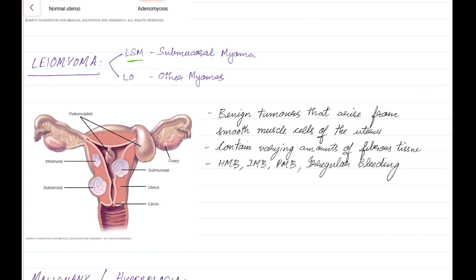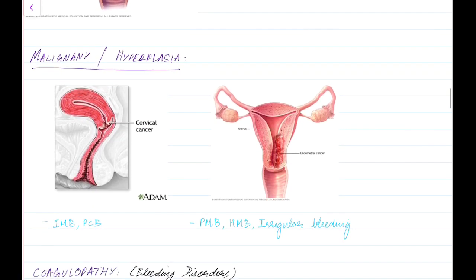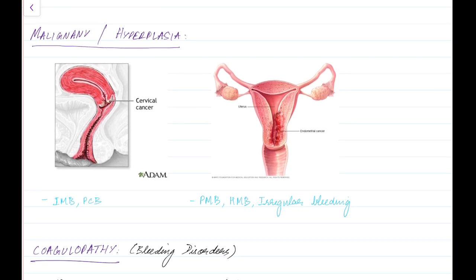Coming to the next cause — leiomyoma. Leiomyoma can be divided into LSM (submucosal leiomyoma) and 'other' myomas. Leiomyomas are benign tumors that arise from smooth muscle cells of the uterus and also contain varying amounts of fibrous tissue. Leiomyomas can cause heavy menstrual bleeding, intermenstrual bleeding, postmenopausal bleeding, and irregular bleeding. This picture shows the various types: subserosal, submucosal, and intramural.